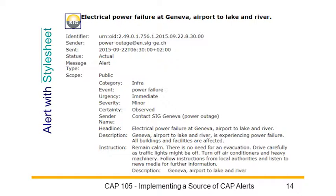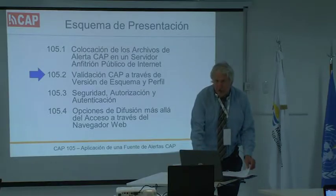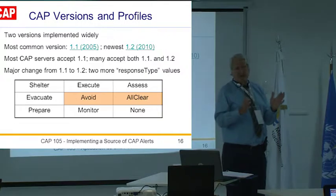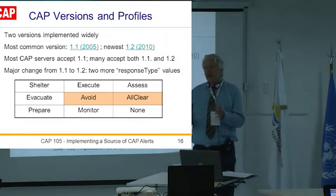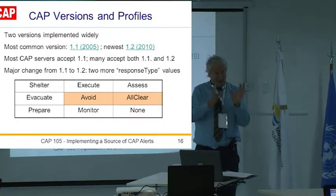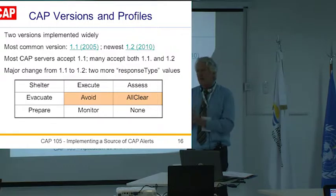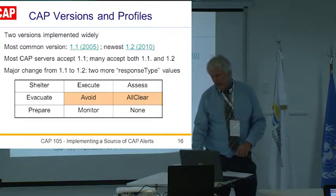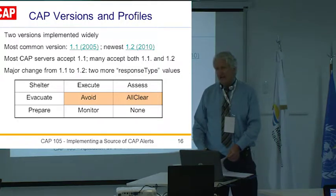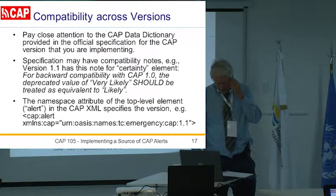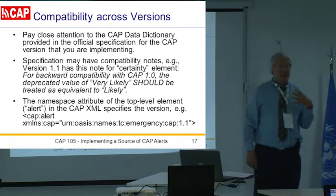You might think you're done, but let me add a caution: you need to make sure it's valid. The downside of something processable by machines and readable by humans is the machines are very fussy — they want things well defined. Well defined means it complies with the CAP schema. There are two versions: 1.1 and 1.2. 1.2 is already eight years old, so don't worry about 1.1 — yours will all be 1.2. You have to validate it, but that's automatically handled when you use a tool.